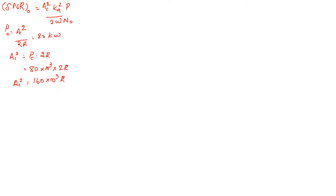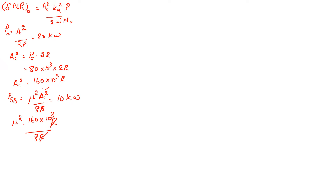The sideband power PSB is given by mu square times AC square divided by 8R, which equals 10 kilowatt. Substituting the value for AC square: mu square times 160 times 10 raised to 3 times R, divided by 8R. The R cancels, giving mu square times 160 times 10 raised to 3 divided by 8, which equals 20 mu square, equal to 10 kilowatt. Solving gives mu square equal to 0.5.